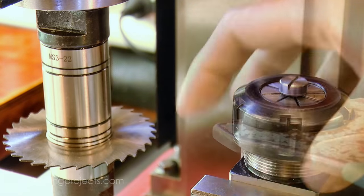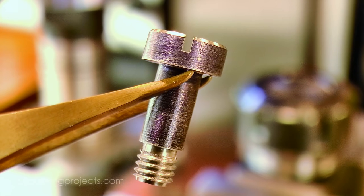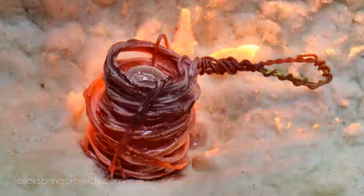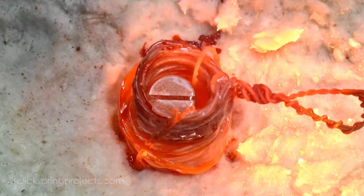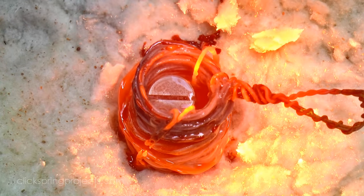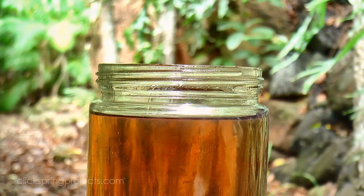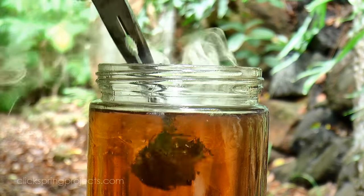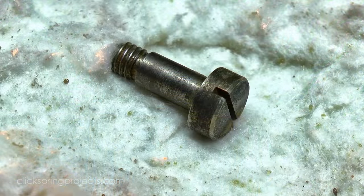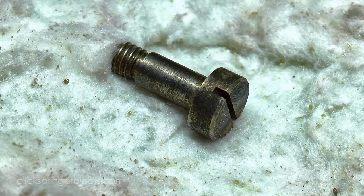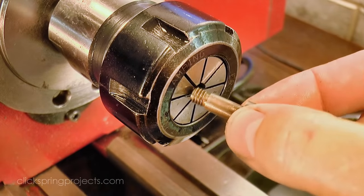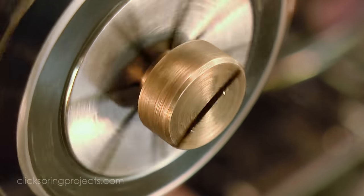At this point all of the main features of the axle are in place. It just needs to be quench hardened and then tempered. I've tempered it to a medium straw color, which means that it remains quite hard but it's also quite tough too, so it should last well when it's in service.